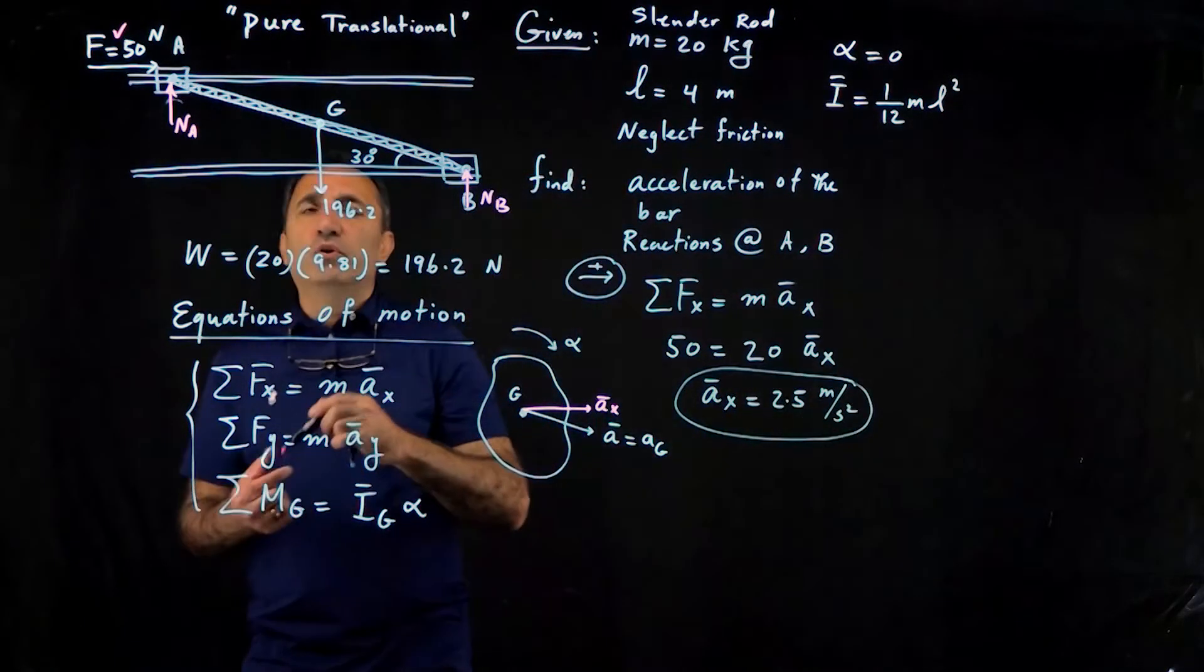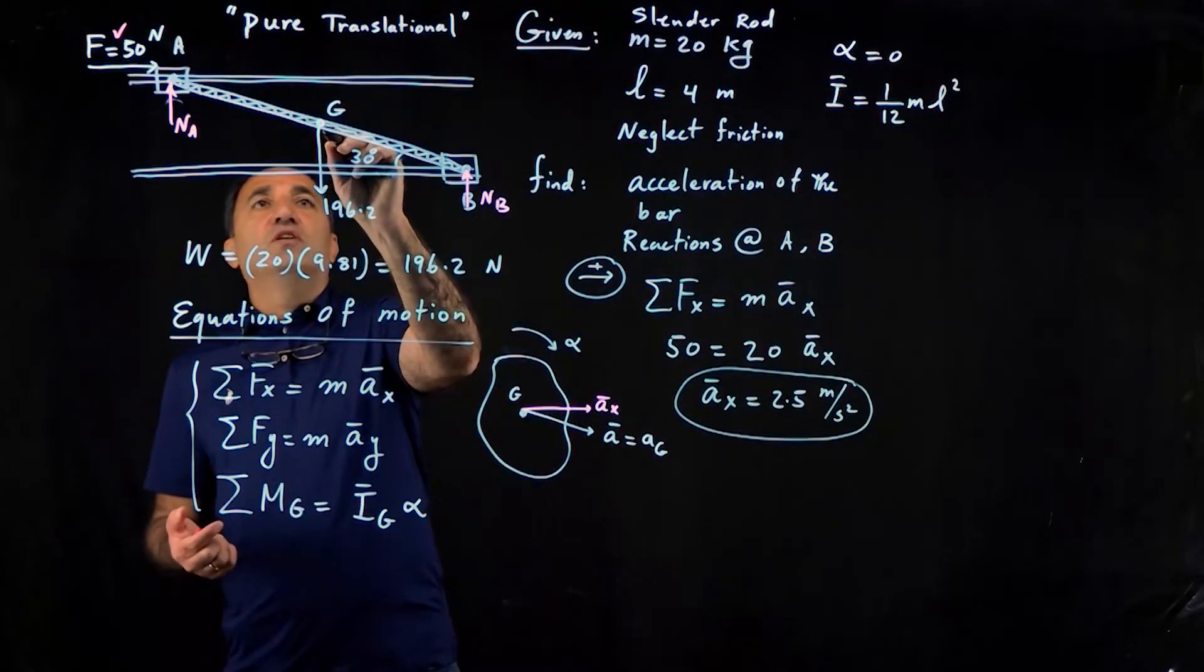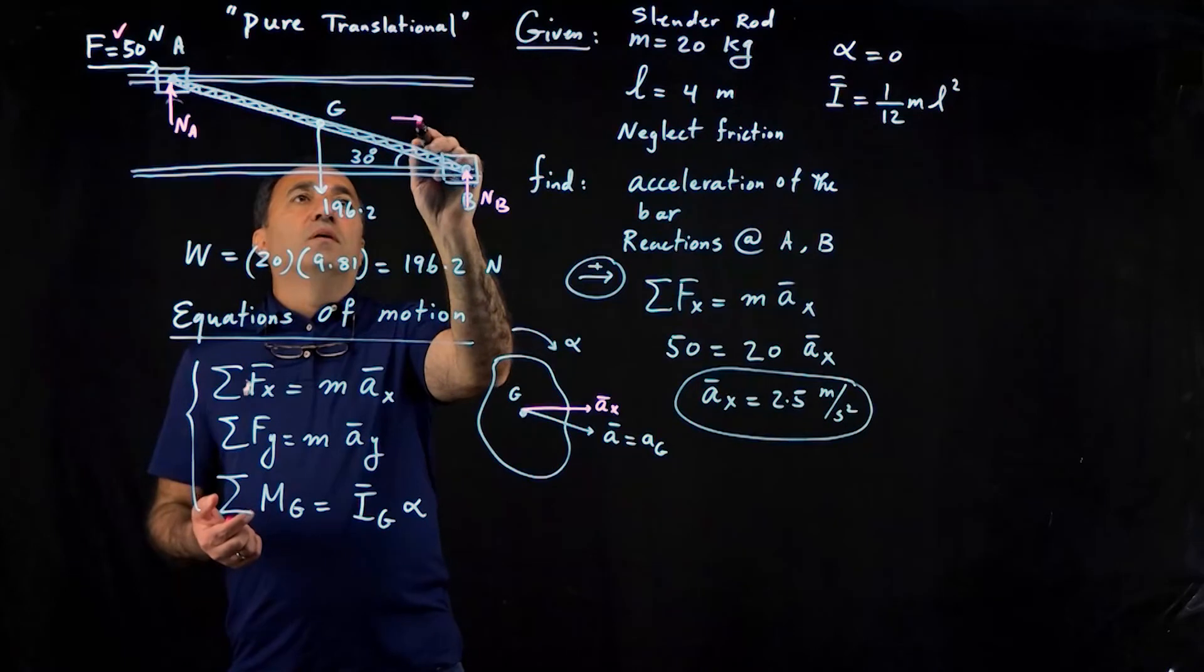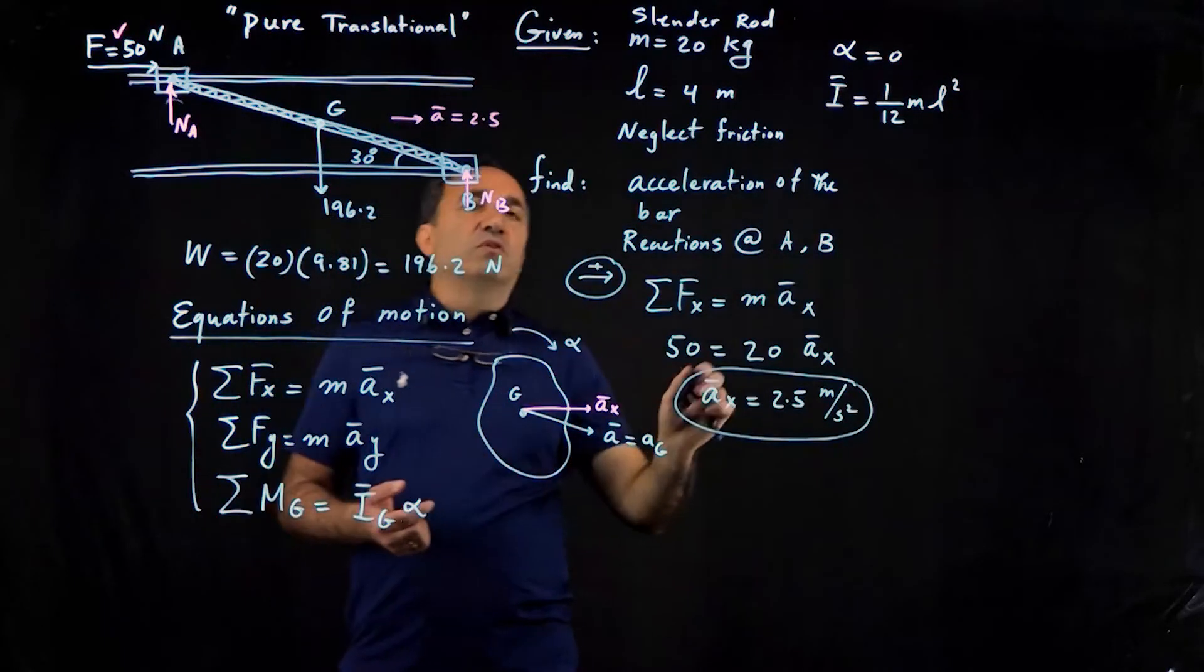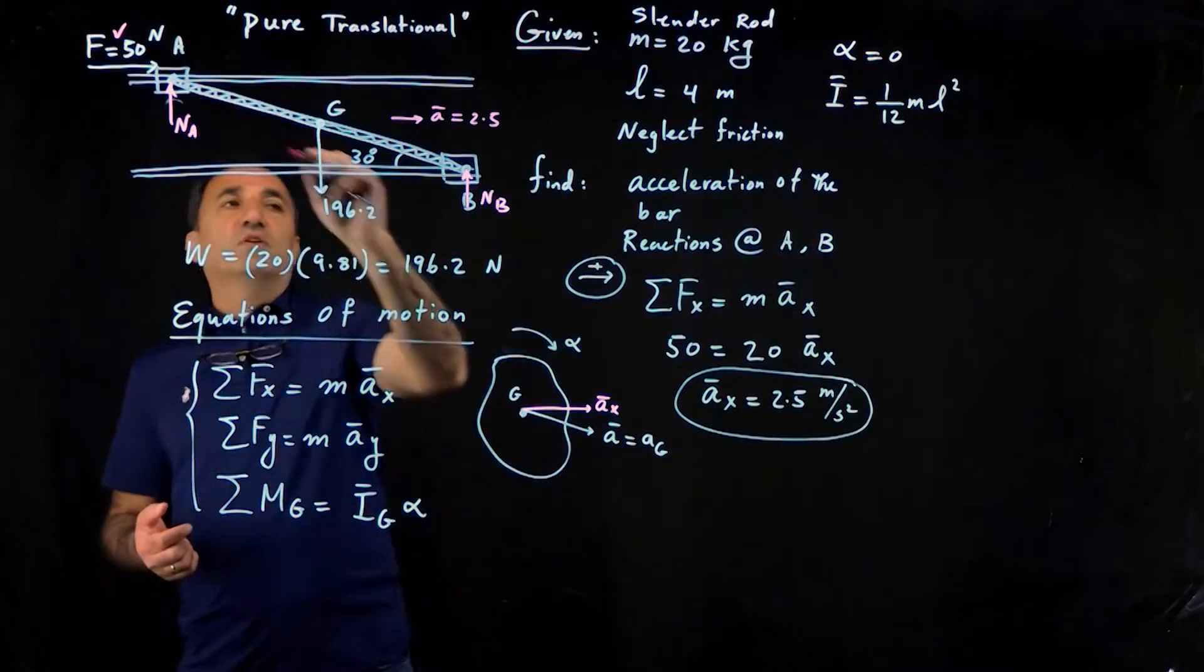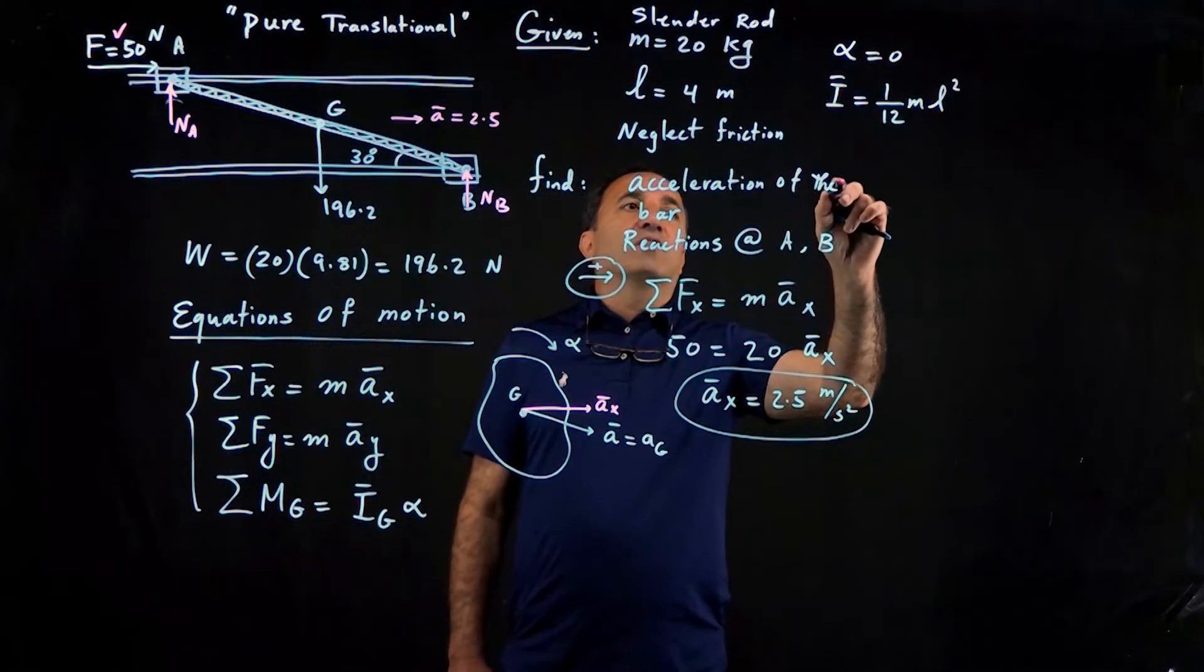Because obviously this is pure translation. So acceleration of g is going to be 2.5 meters per second squared, and that's acceleration of a and acceleration of b. So that answers the first question, what is the acceleration of the bar?